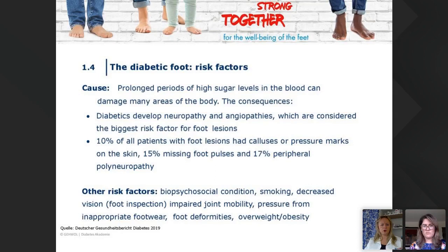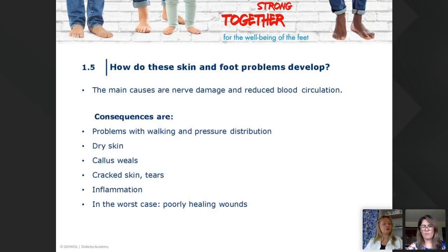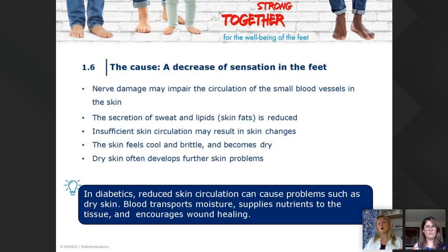Other risk factors include pressure from inappropriate footwear. With neuropathy, they won't feel blisters forming. I see that a lot here. Food deformities, overweight, and obesity are also risk factors. The nerve damage and reduced blood circulation cause problems with walking, pressure distribution, dry skin, callous, cracked skin, and inflammation.